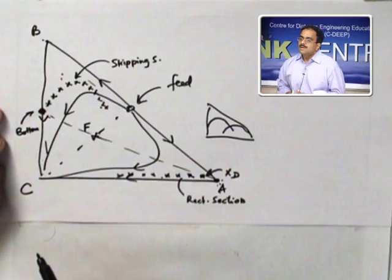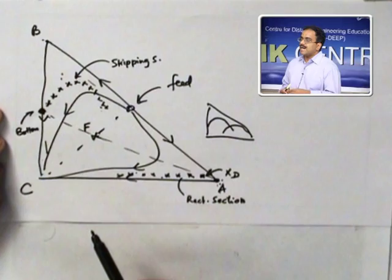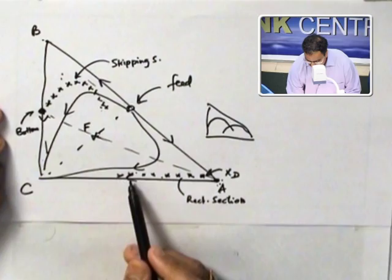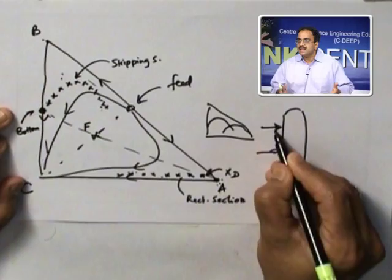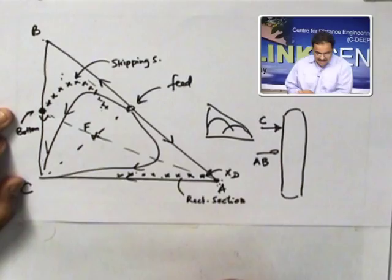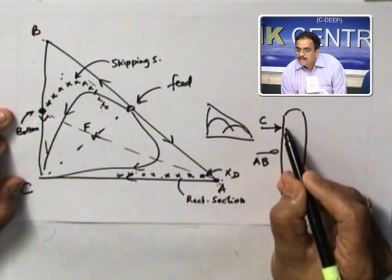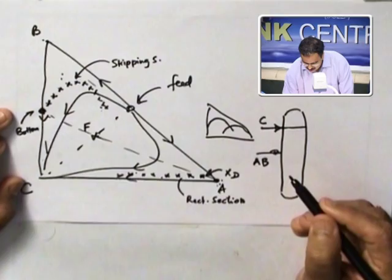That is the reason — since the rectifying section is not following this particular pattern, the intersection is difficult. That is why I do not get a feasible simple distillation column. So what is the solution? The solution is to make them intersect somehow. Now, if you know the configuration used for extractive distillation, it is not like a simple distillation column. You remember the configuration? Where do you give the solvent? Solvent is the external component. You do not have a combined feed — the solvent is given above the feed.